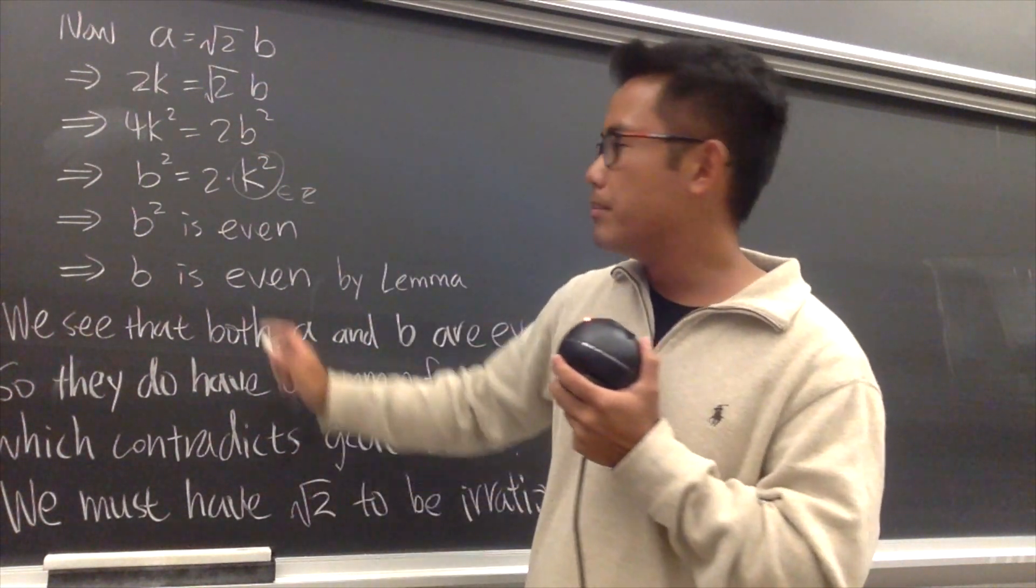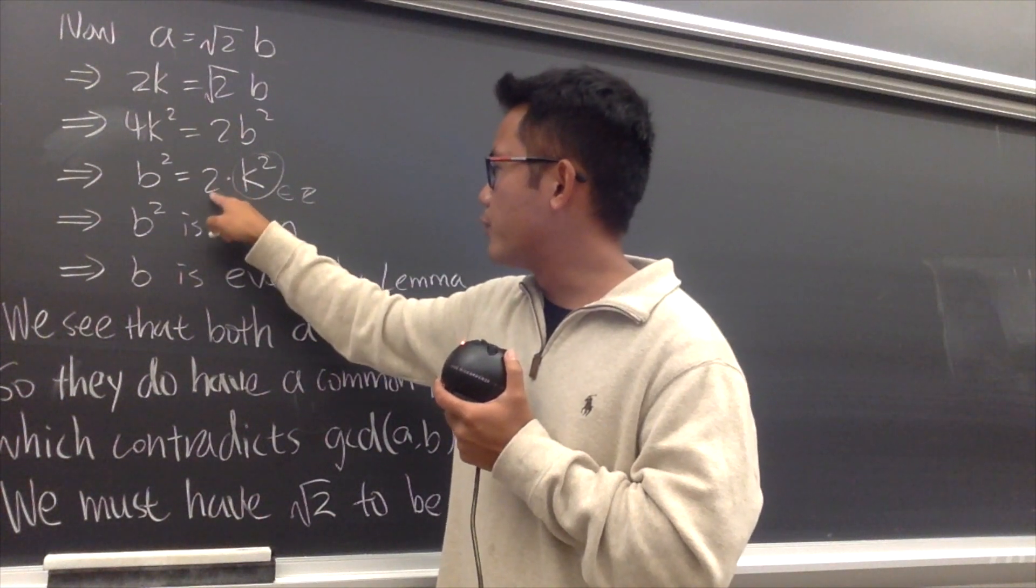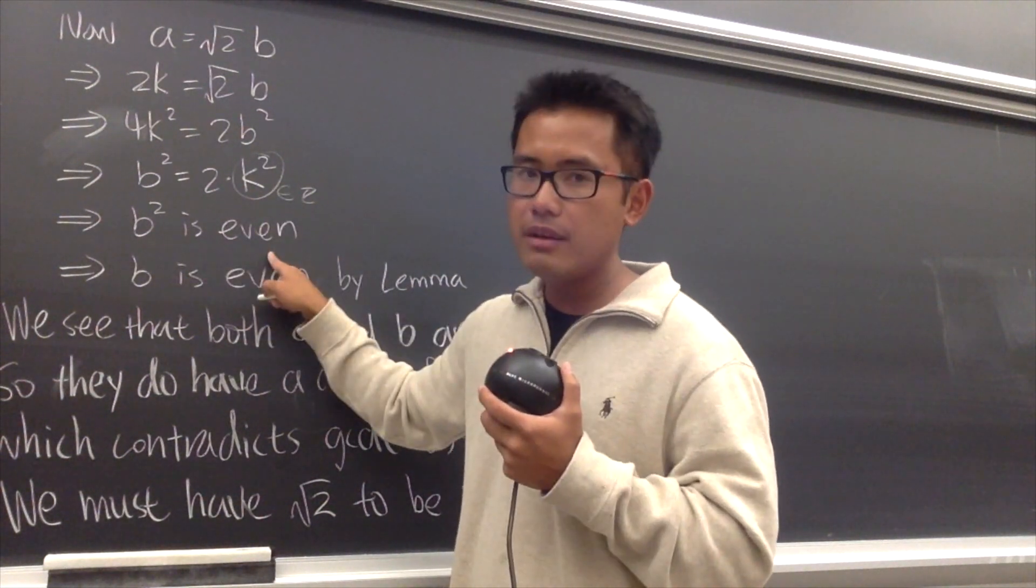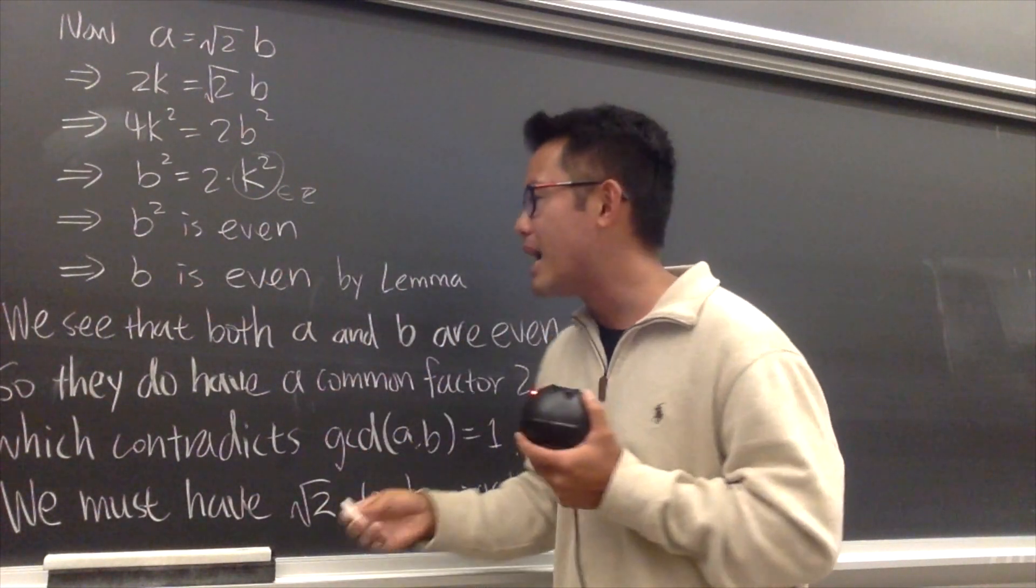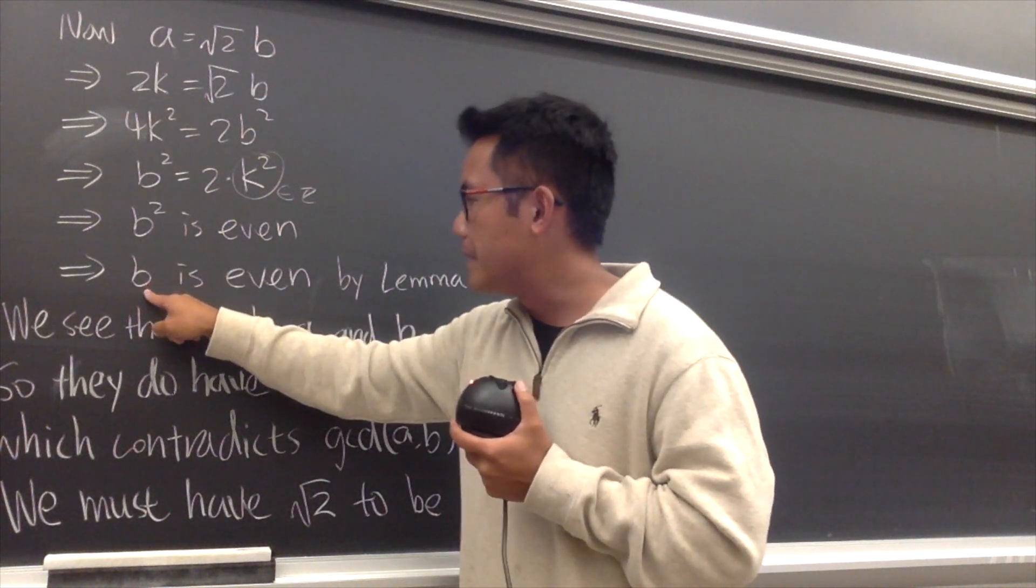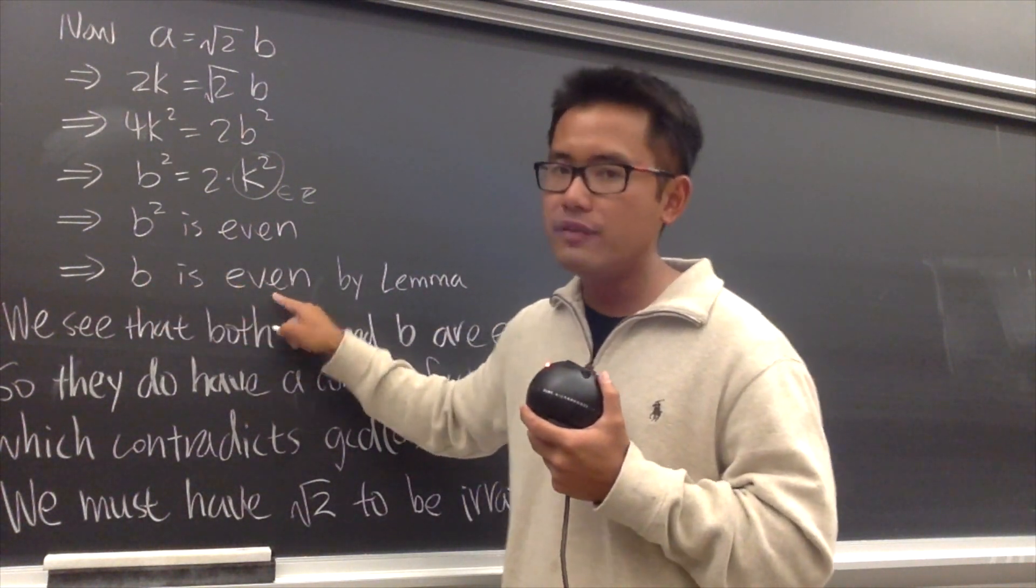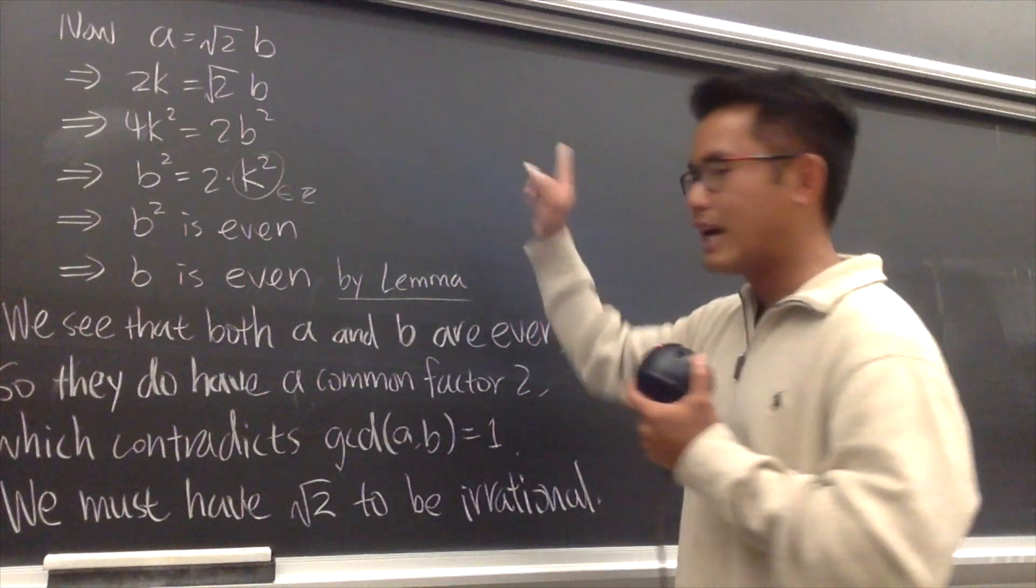So that means b squared is in the form of 2 times an integer. b squared is even. And we use the same lemma. We can also say that b is also even by the same lemma that we had earlier.